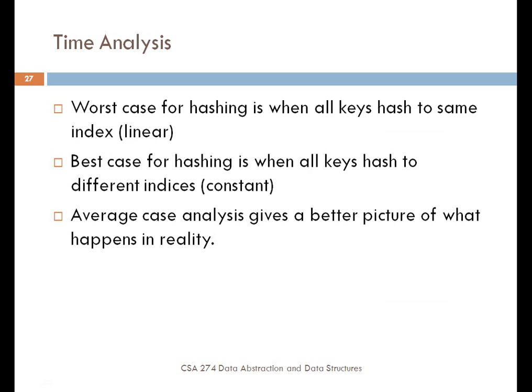As far as time analysis of hash tables is concerned, there are a number of things to address regarding how many accesses are required to actually find something in the array when using hashing. The worst case for hashing is when all keys hash to the same index and you end up with a linear search, which is O(N). The best case is when all keys hash to different indices — with a perfect hashing function, you find the element on your first access, giving you O(1). The average case analysis gives a better picture of what actually happens in reality, and there's discussion of this in the textbook in Chapter 10.2.